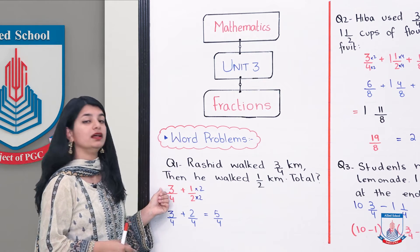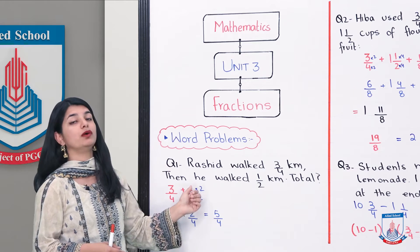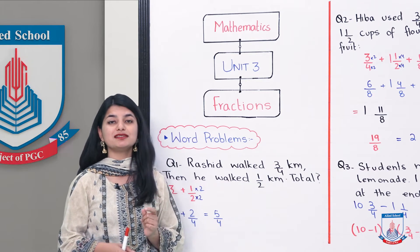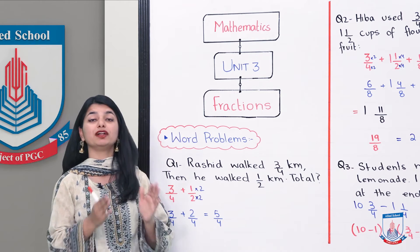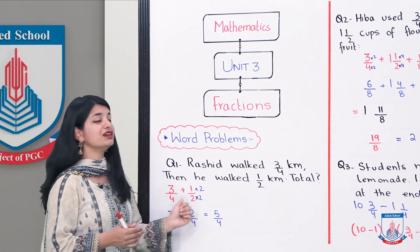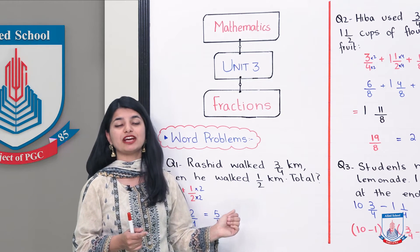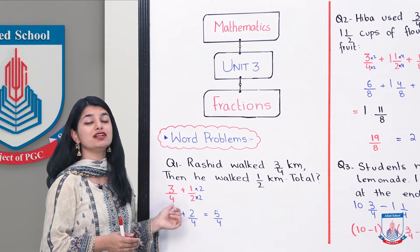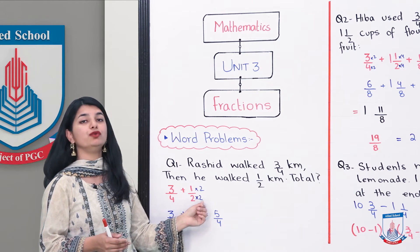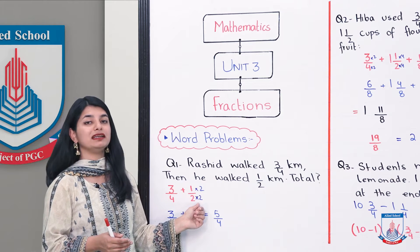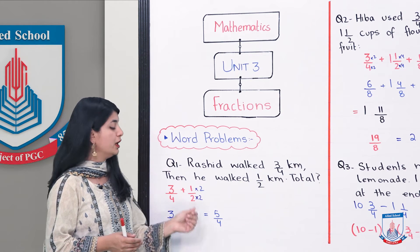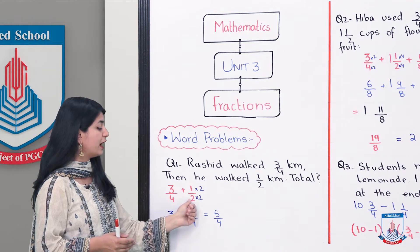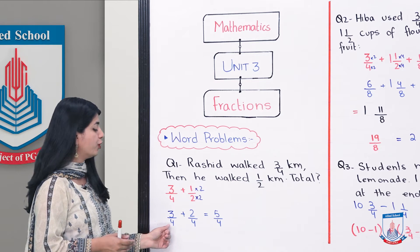If you think about it, he walked first 3 by 4 kilometers, then he walked 1 by 2 kilometers. 3 by 4 plus 1 by 2 equals. So, we will multiply 2 into 2 equals 4. And because the denominator is multiplied, the numerator is multiplied by 2 into 2 and 1 into 2. So, our fraction is now 1 into 2 is 2 and 2 into 2 is 4. So, we have 3 by 4 plus 2 by 4.